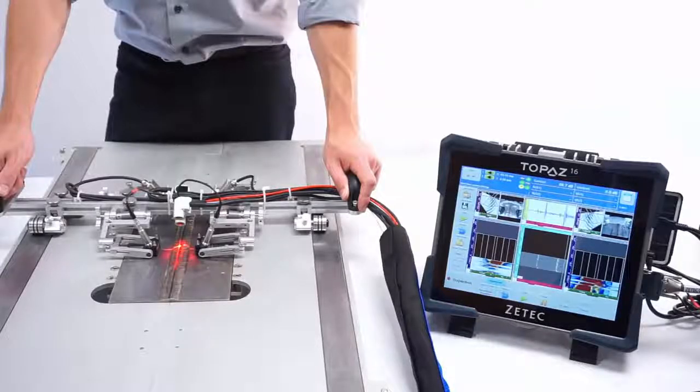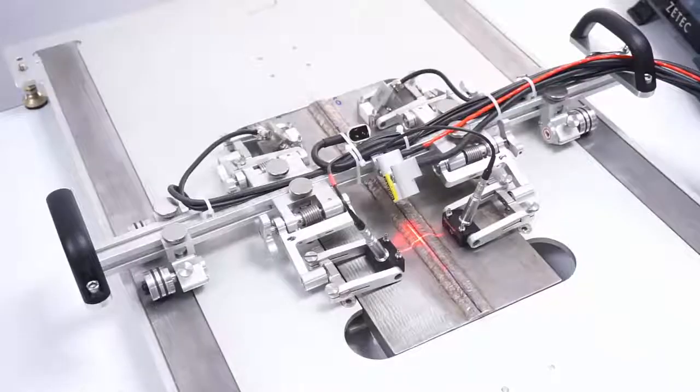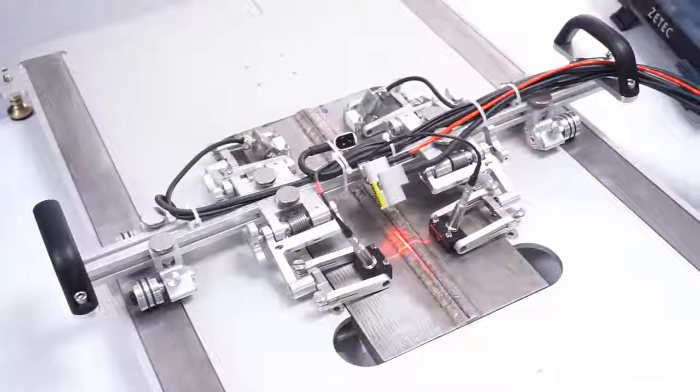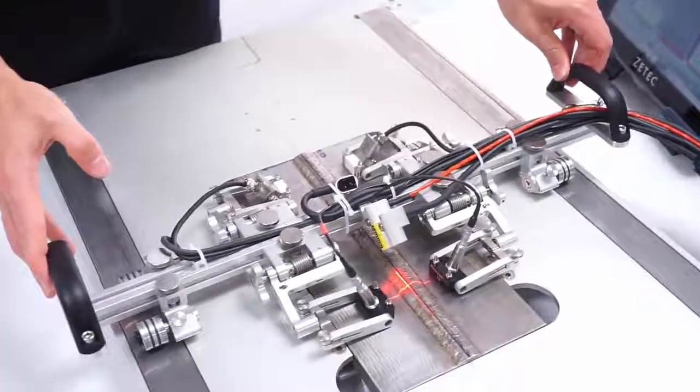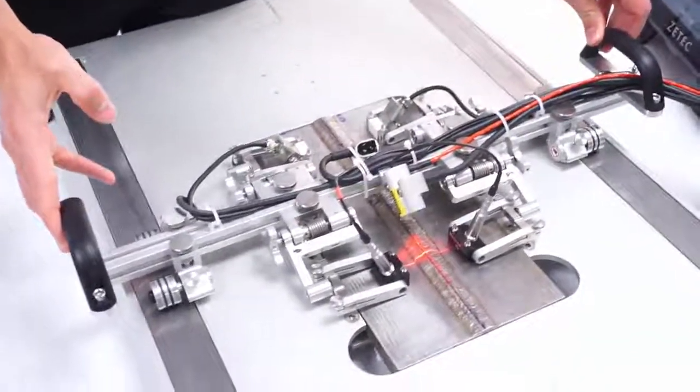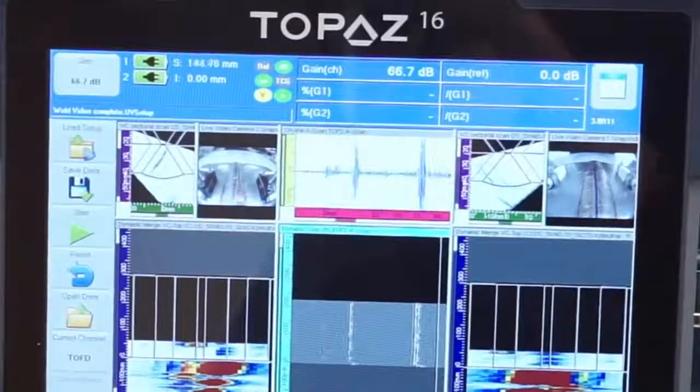The optional vision kit allows for the attachment of two micro cameras and a laser alignment guide to the weld crawler, all without compromising its tight clearance of just over 2 inches. The cameras are extremely useful for monitoring the coupling of the probes on the component surface and potential drifting of the scanner from the weld centerline.